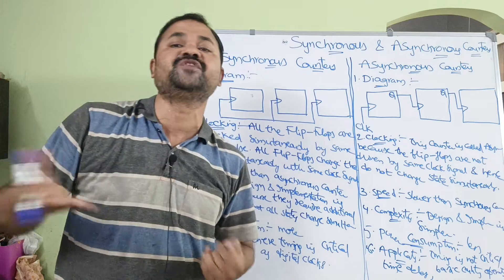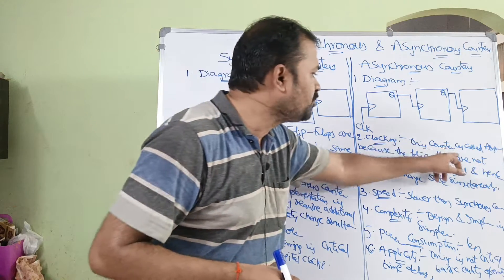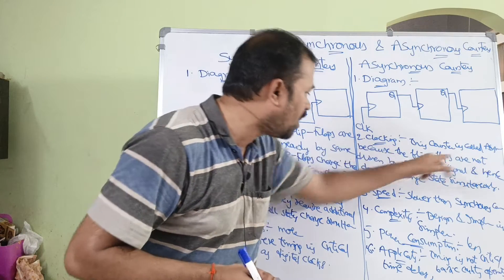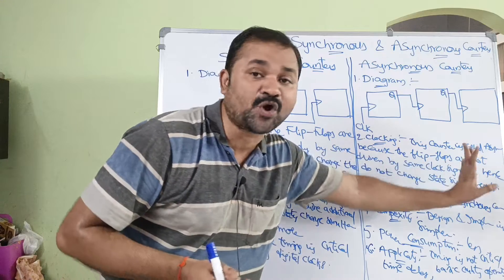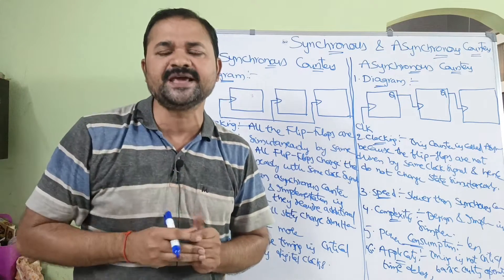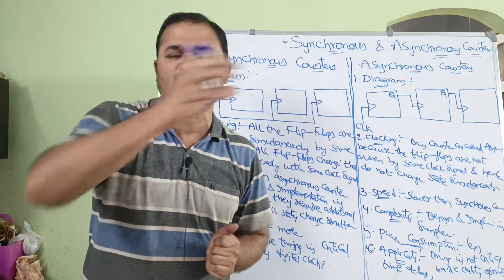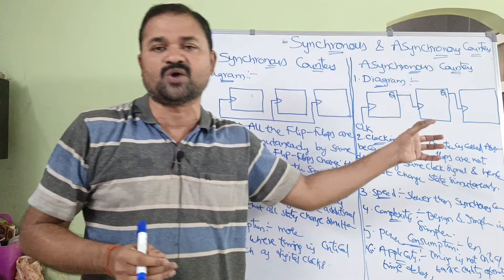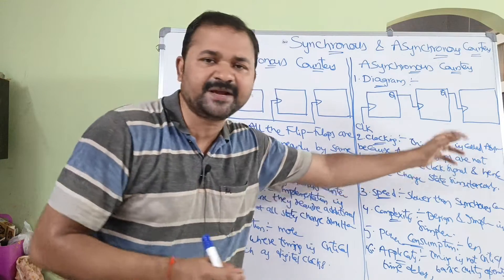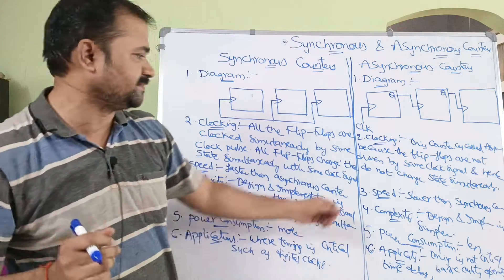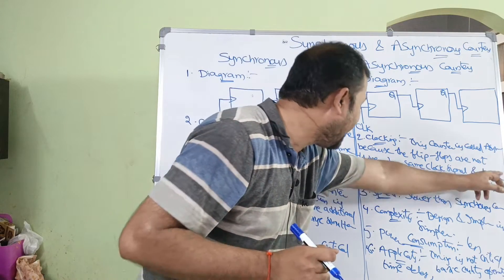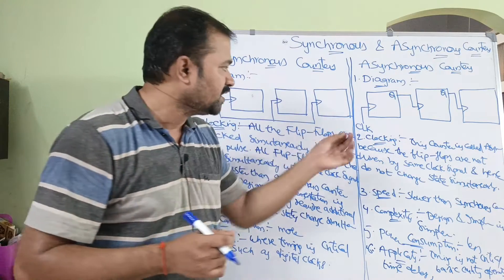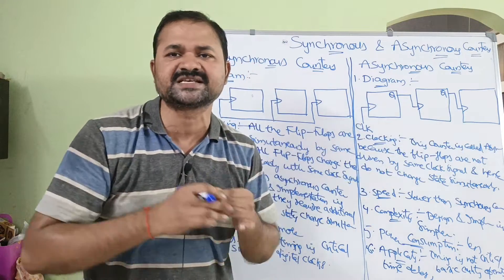In an asynchronous counter, the output of one flip-flop is connected as the clock pulse to the next flip-flop. This counter is called asynchronous because the flip-flops are not driven by the same clock signal simultaneously. Since we are not applying the same clock pulse to all flip-flops at the same time, all the flip-flops do not change state simultaneously — there will be some delay.